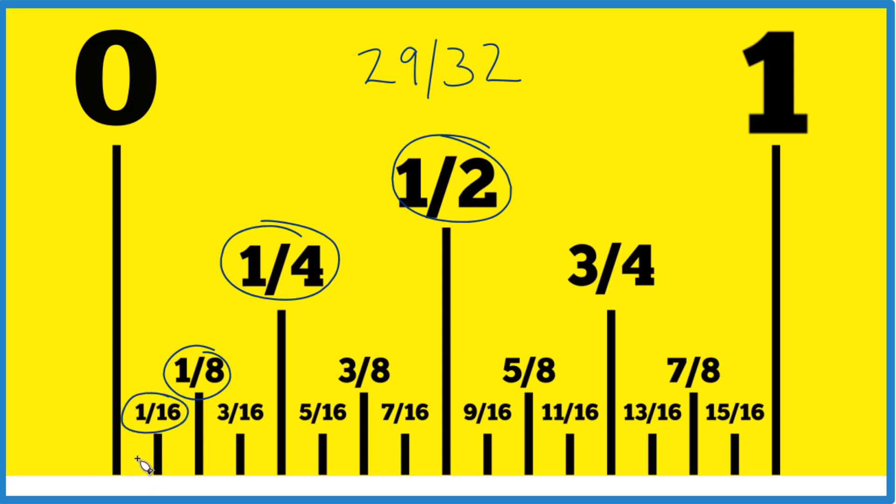Then I divide that 1/16th of an inch in half, like this. That means I have 32nds of an inch, right here. This distance is 1/32nd of an inch.